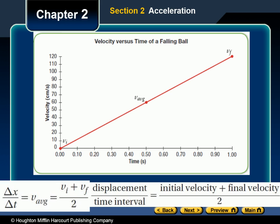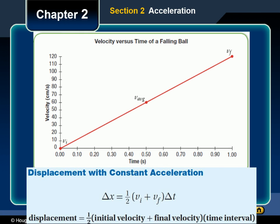To find an expression for displacement in terms of initial and final velocity, we set the two expressions for average velocity equal to each other. So delta x divided by delta t equals (initial velocity plus final velocity) divided by 2. Multiplying both sides by delta t gives us an expression for displacement as a function of time. This equation can be used to find the displacement of any object moving with constant acceleration.